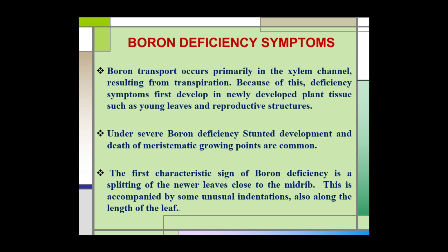Under severe boron deficiency, stunted development and death of meristematic growing points are common. The first characteristic sign of boron deficiency is the splitting of newer leaves close to the midrib, and this symptom is accompanied by unusual indentations along the length of the leaf.